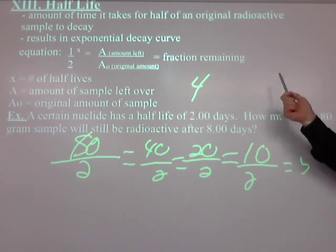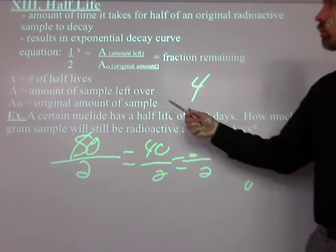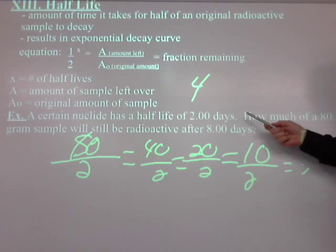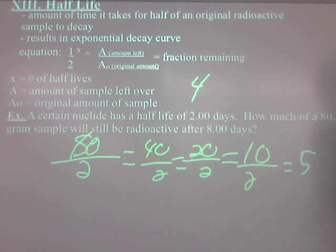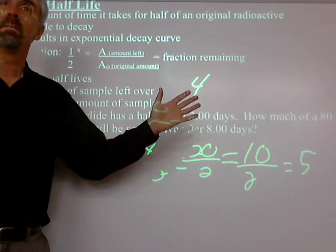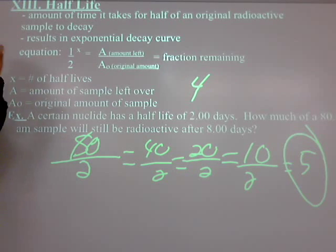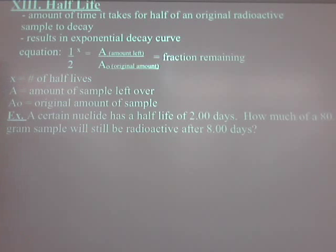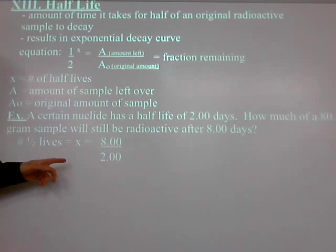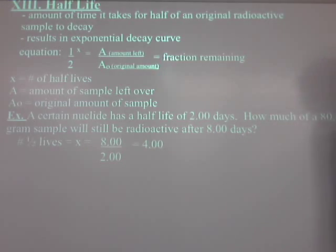Now, I'm not going to give you this easy of a problem on the test. Let's do it using the actual method. The number of half-lives is X, so we divide 8 by 2 and get 4 — that's X, 4 half-lives. I know X. Do I know A or A-sub-zero? The 80 grams is the original amount; I'm looking for A, how much will still be around.